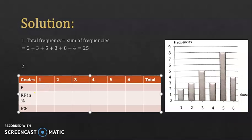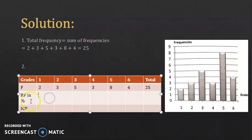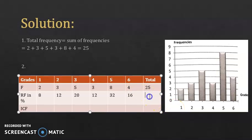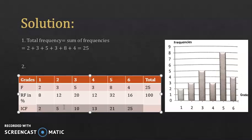Now for the frequency — since the bar graph represents the frequency, get them from the graph as before: for 1 it's 2, for 2 it's 3, and so on. The total frequency is 25 from part 1. For the relative frequency in percentage, recall that it's frequency over total frequency times 100. For the first value it's 2/25 × 100, and so on. The total for relative frequency in percentage is 100 — add them to check. For the increasing cumulative frequency: the first value stays as 2, the second is 2 + 3 = 5, and so on. There is no total for this row.